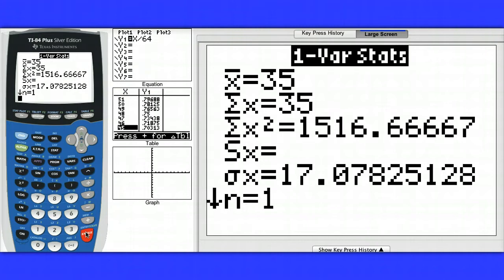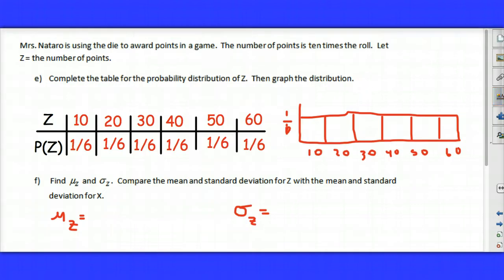But let's take a look at what happens to the standard deviation. Oh, look, it looks like the standard deviation is multiplied by 10 as well. So our new mean is 35 and our new standard deviation is 17.1.